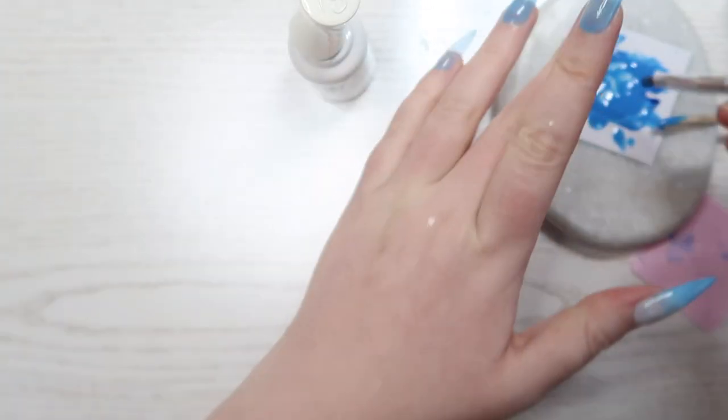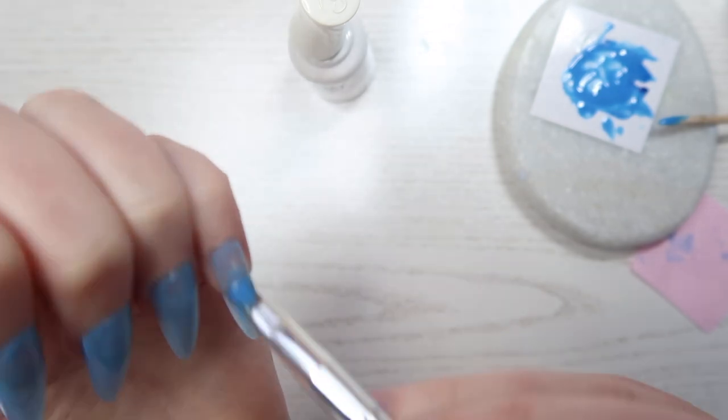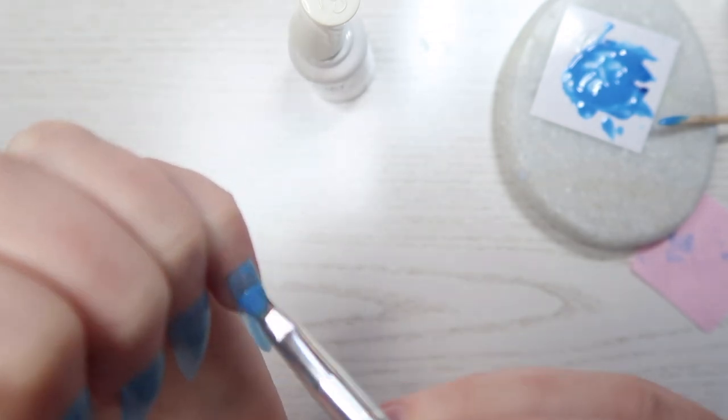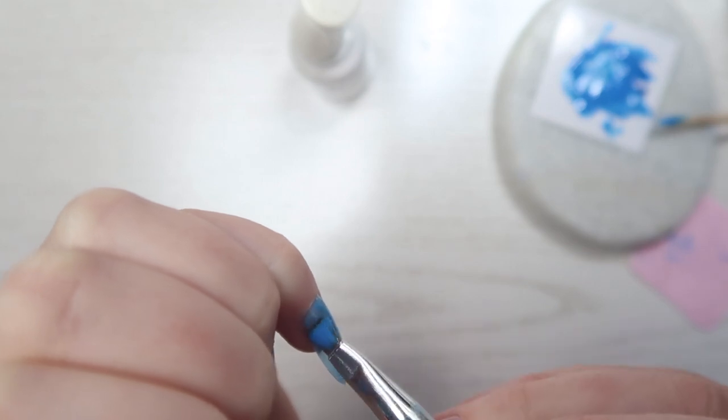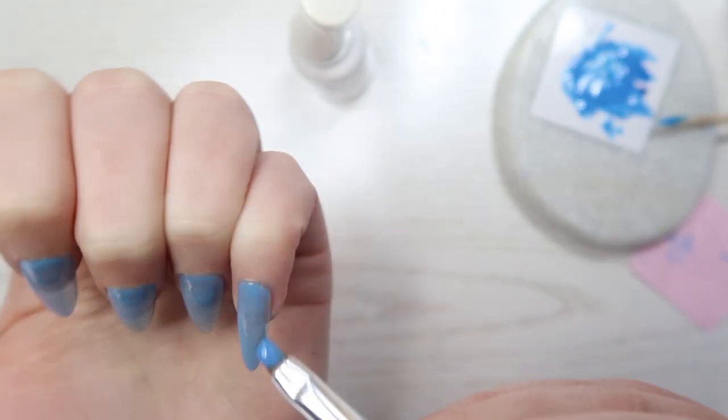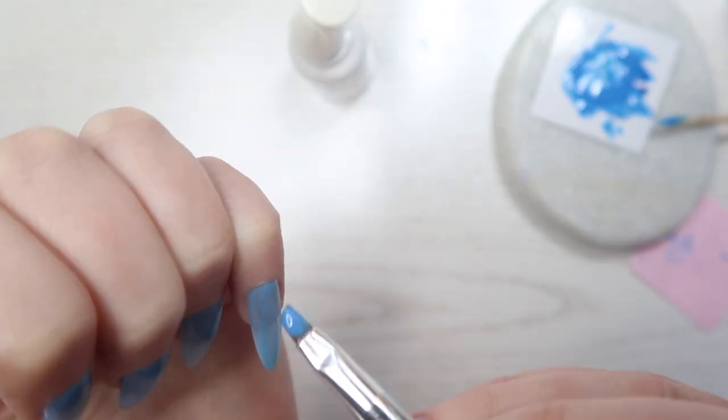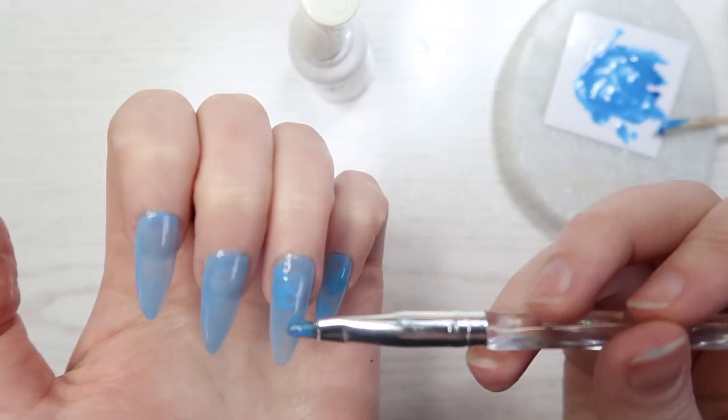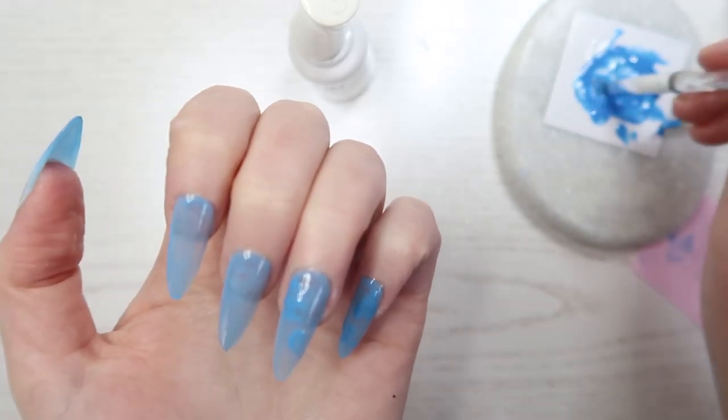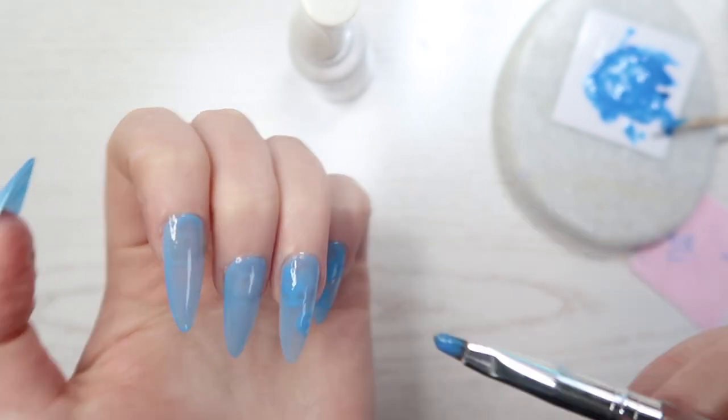When the first coat is cured, we are going to apply a second coat, but I'm going to add some extra smudges on a few places. This will create a little bit of extra depth when I am going to paint the clouds over them.